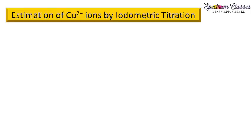Hello everyone, welcome back to Spectrum Classes. This is my next video in continuation with iodometric and iodimetric titrations. In one video I discussed the differences and similarities between iodometric and iodimetric titrations, and in my previous video I discussed the determination of vitamin C by iodometric titration. Here in this video I am going to discuss the estimation of copper ions by iodometric titration.